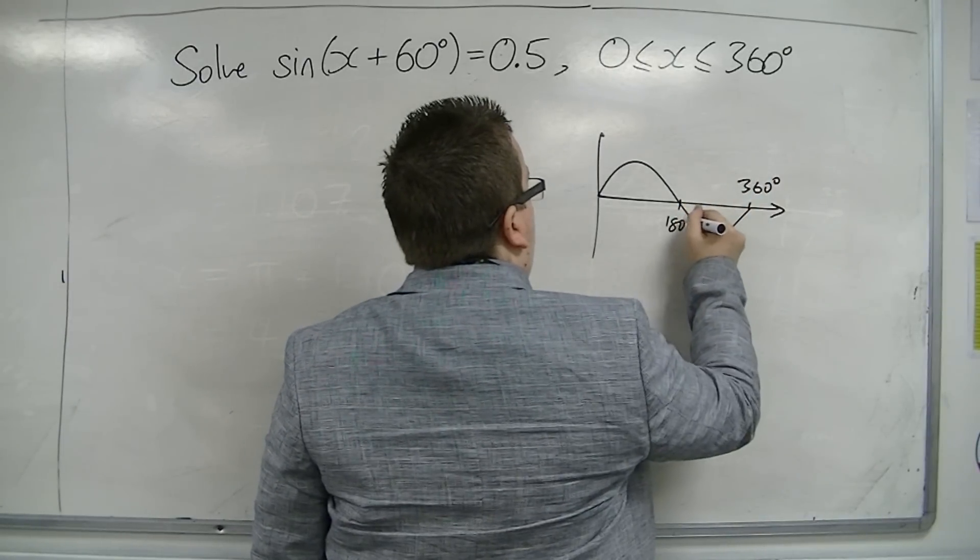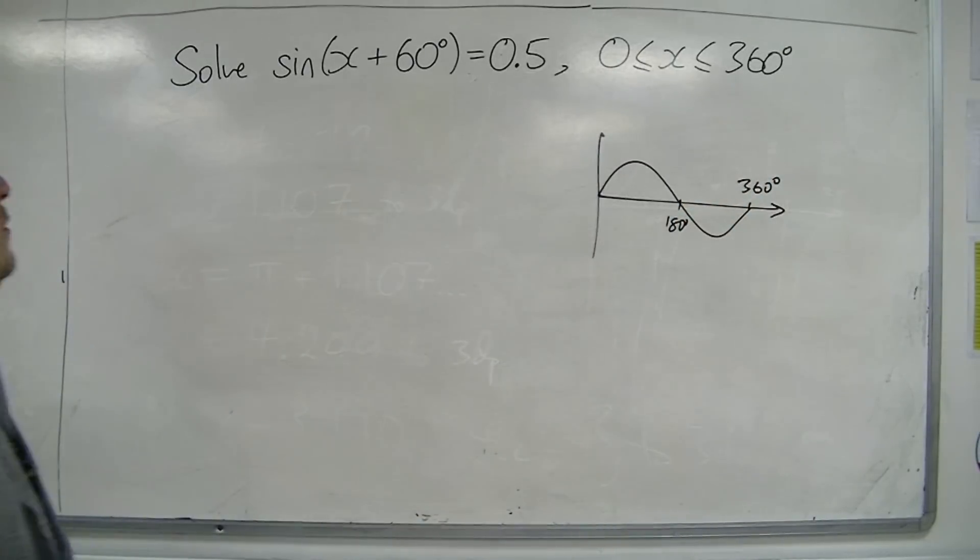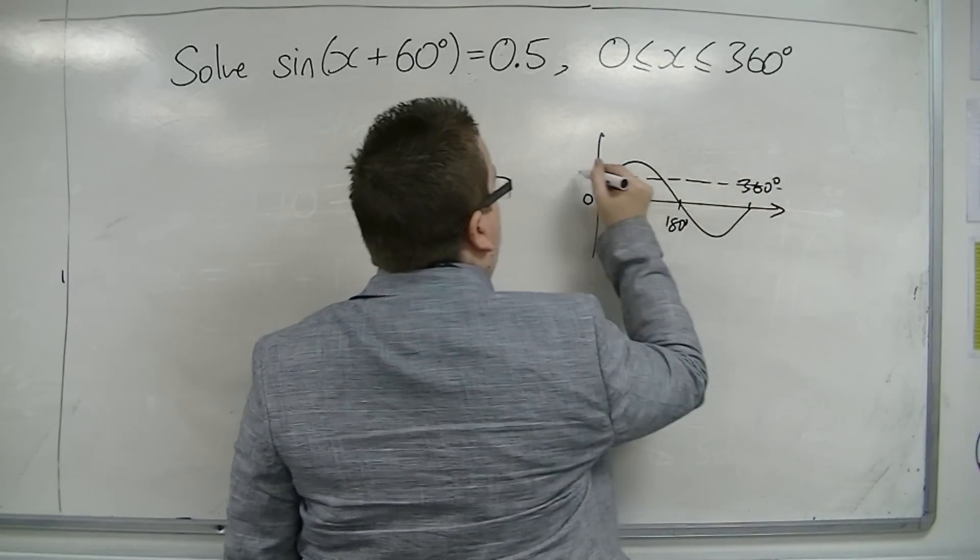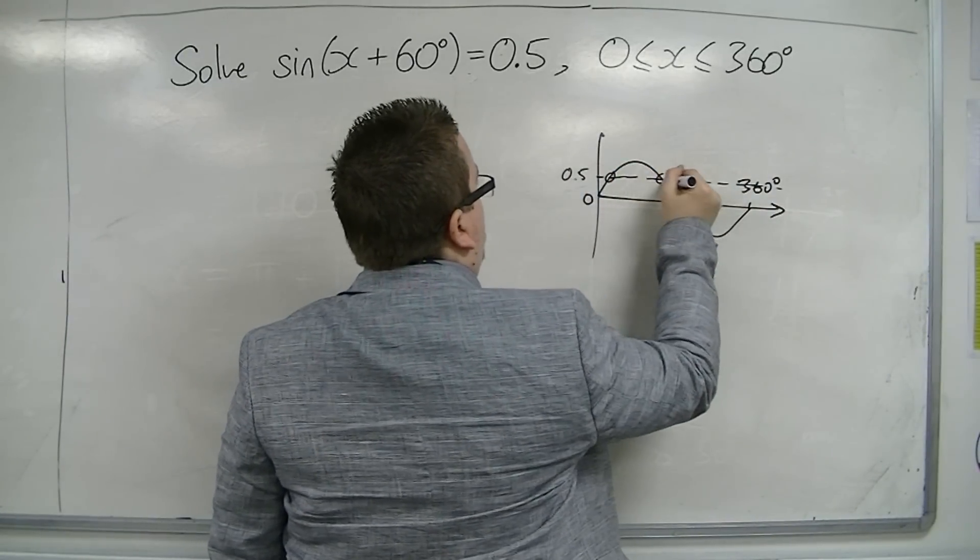So here's sine x between 0 and 360, and I'm looking at 0.5, and so I'll be expecting two solutions.